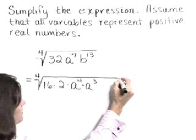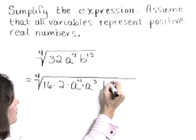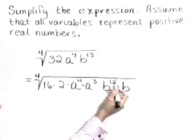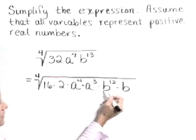b to the thirteenth, we'll write as b to the twelfth times b. We'll be able to take the fourth root of b to the twelfth.